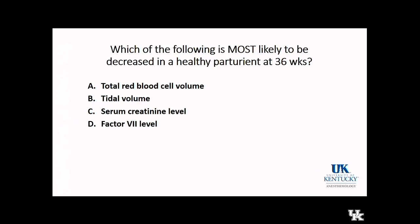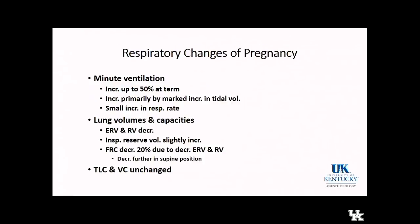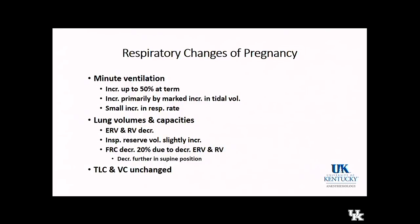One thing to be aware of is that total red blood cell volume does increase. You have a dilutional anemia of pregnancy because plasma volume increases relatively more, but red blood cell volume also increases. Regarding respiratory changes, minute ventilation at term is increased by as much as 50%, predominantly due to increase in tidal volume — similar to how cardiac output is driven predominantly by stroke volume — although you also see a small increase in respiratory rate.